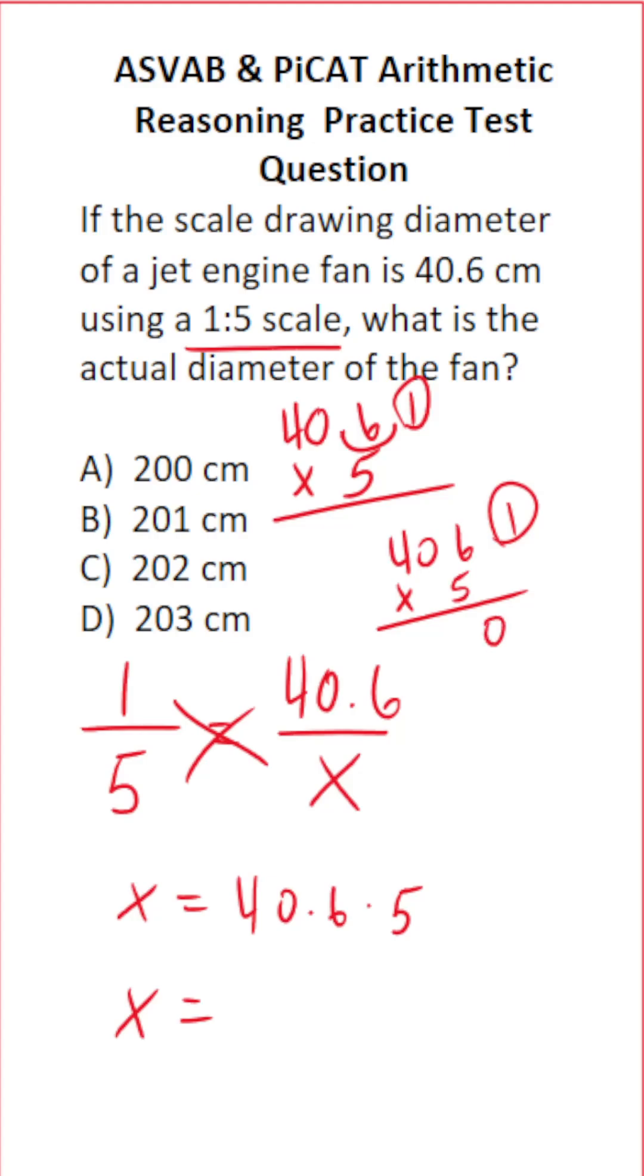And let's work this out. 6 times 5 is 30. Bring down a 0, carry a 3. 0 times 5 is 0, plus 3 is 3. 4 times 5 is 20. Bring our decimal back in. We can see the actual size of the fan is 203 centimeters, answer choice D.